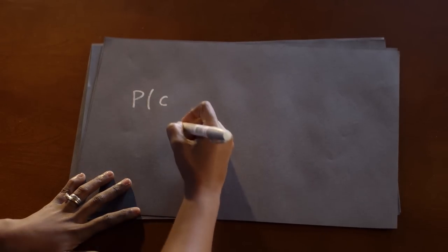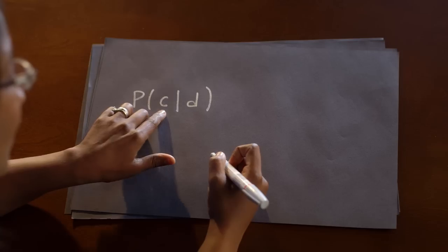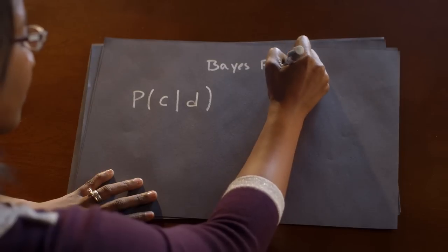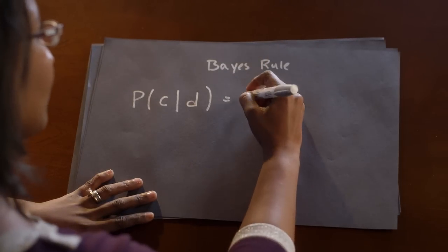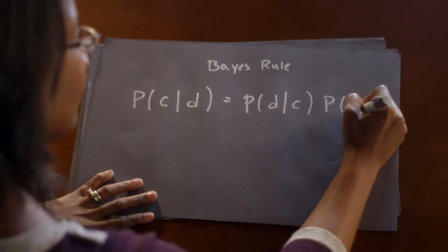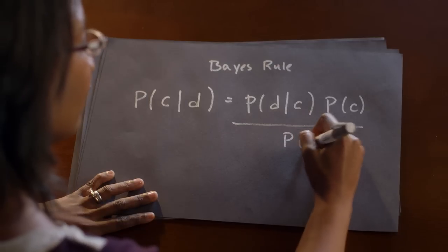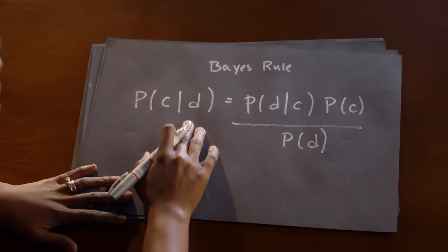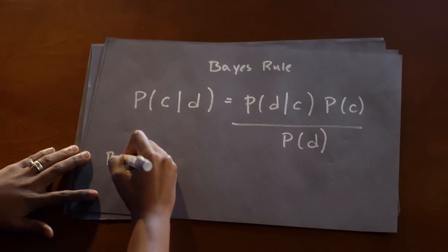We're going to be interested in the following: what is the probability of a class given a document? In other words, what's the probability that my message actually came from a consumer given a particular set of words? By Bayes' rule, we can solve for this probability as the probability of the document given the class times the probability of the class, all divided by the probability of the document. We want to know what class maximizes this probability — that's going to be our Bayes classifier.